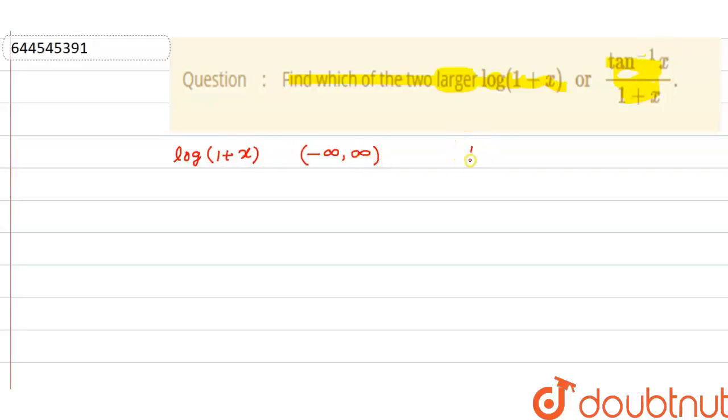Now talk about this function tan^(-1)x/(1+x). Since we know that the range of tan inverse x is minus pi by 2 to pi by 2, if I substitute x less than 0, this will be negative. This part will be negative and this part will also be negative.